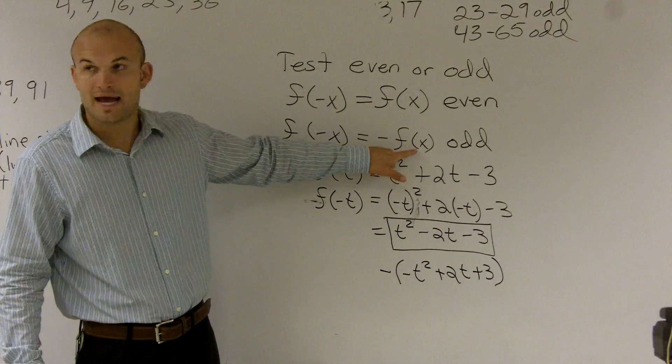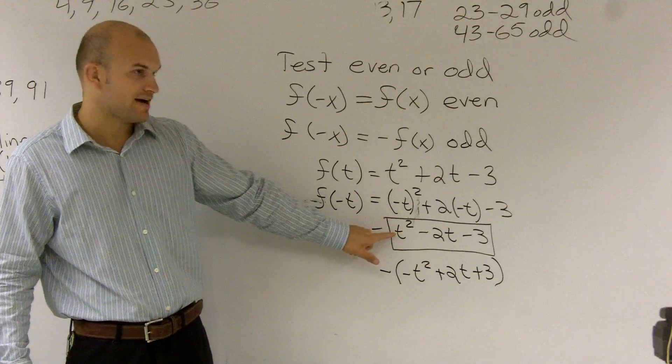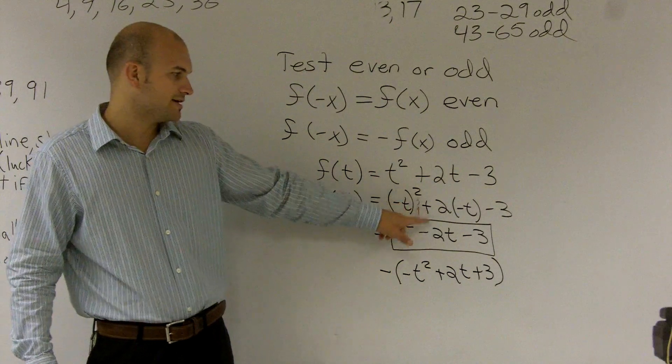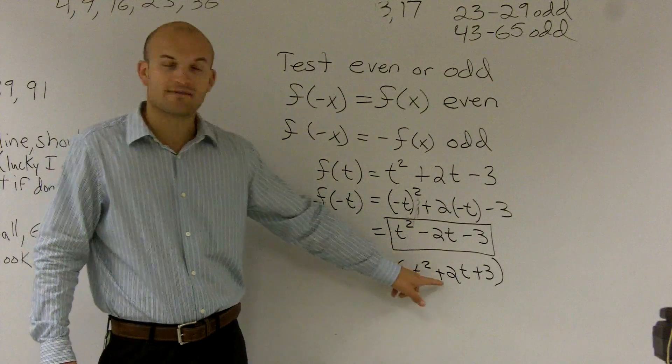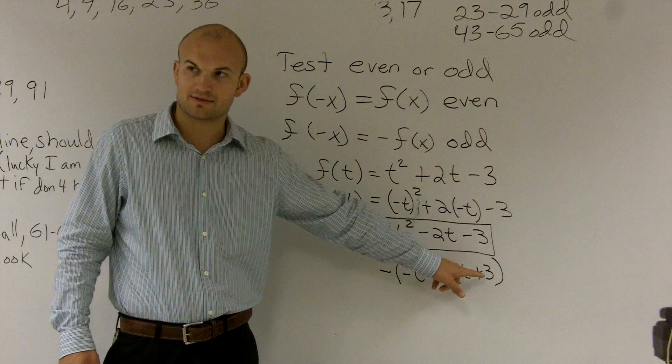So that's what I did. I factored out a negative 1. So when you factor out a negative 1 out of here, you now have a negative t squared. You factor out a negative 1 from here, now you have a positive 2t. And you take a negative 1 away from a negative 3, you have a positive 3. Does that make sense?